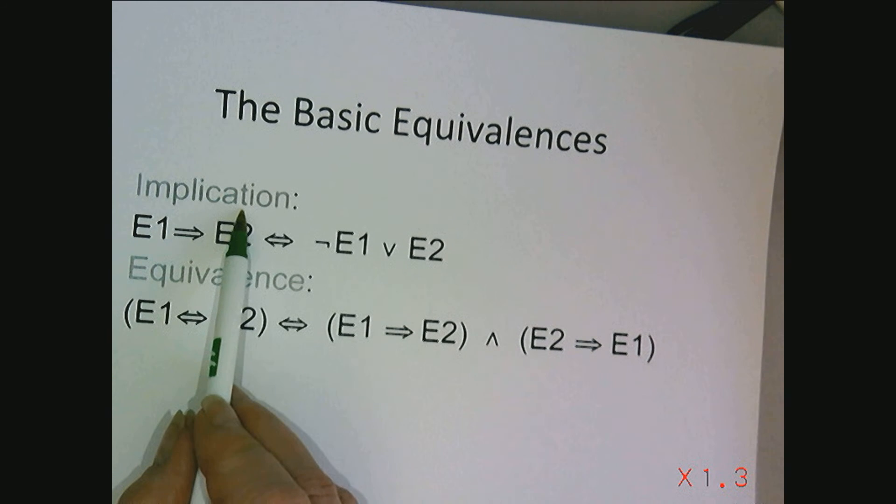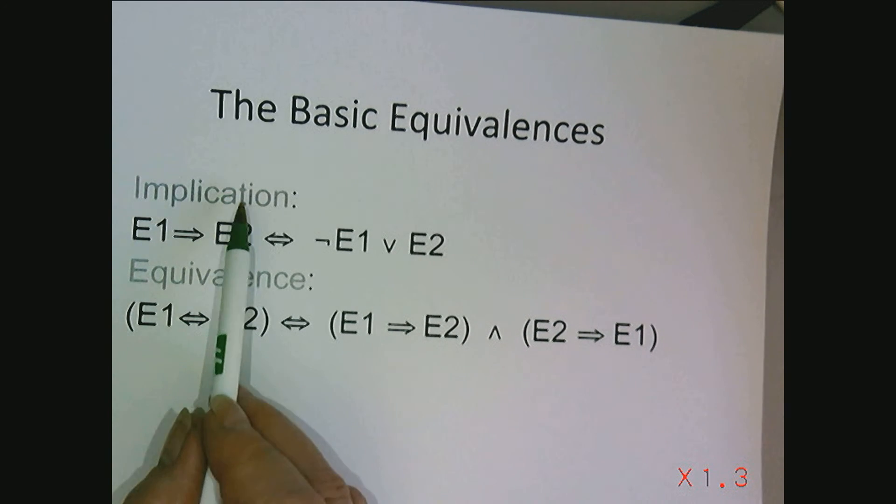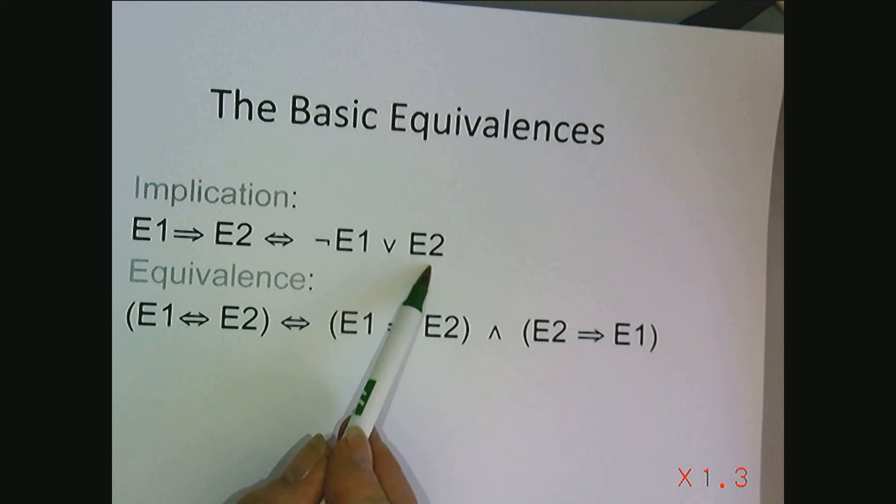Implication is one of the basic equivalences that I use often when I want to prove something about a predicate that involves implication. Usually this is where I start because E1 implying E2 is equivalent to not E1 or E2. We could prove this again using a truth table.